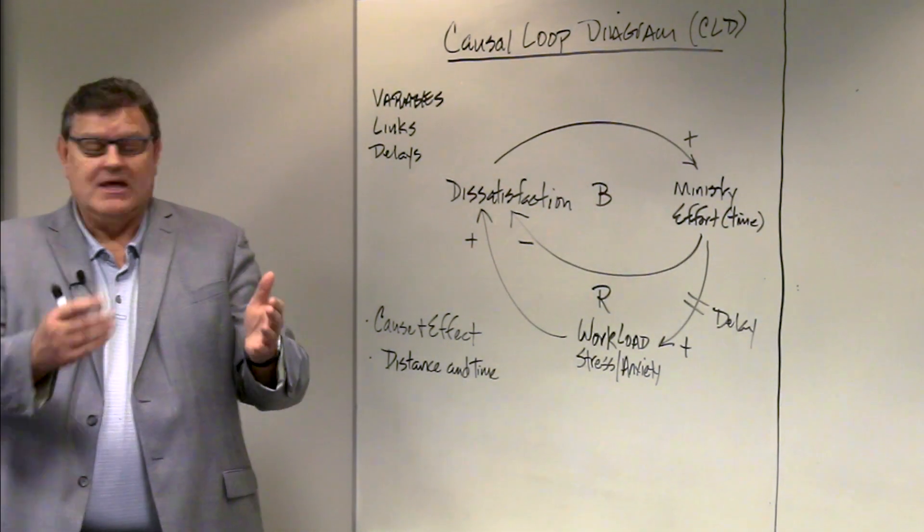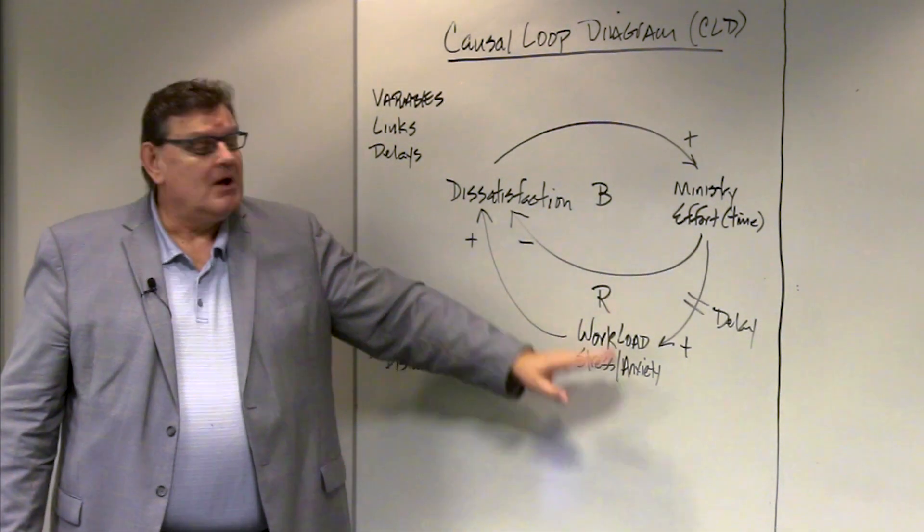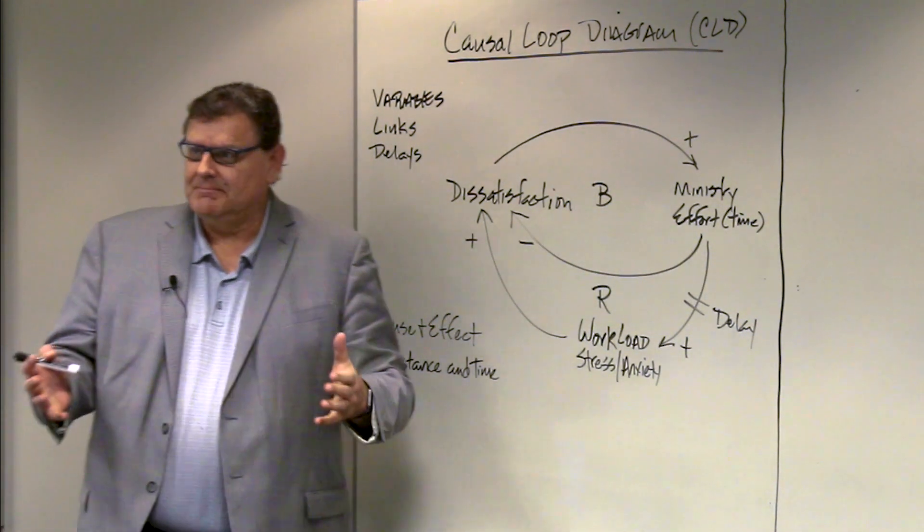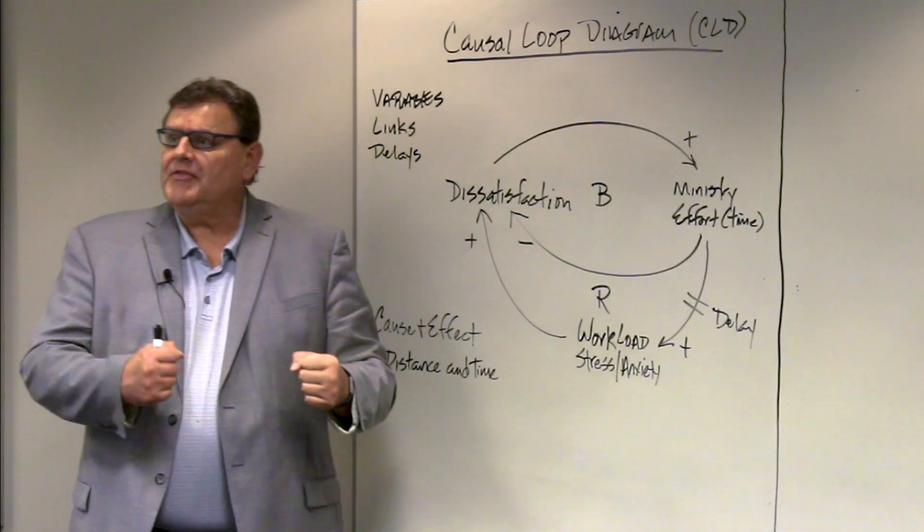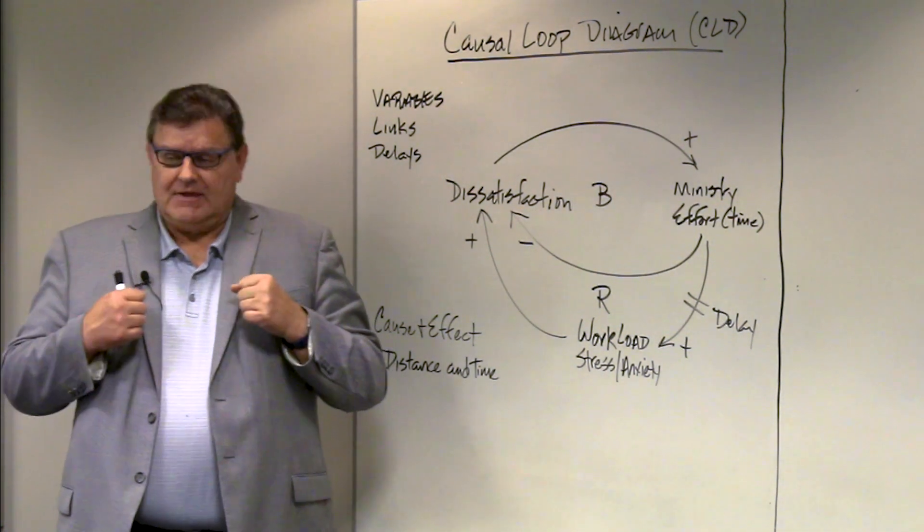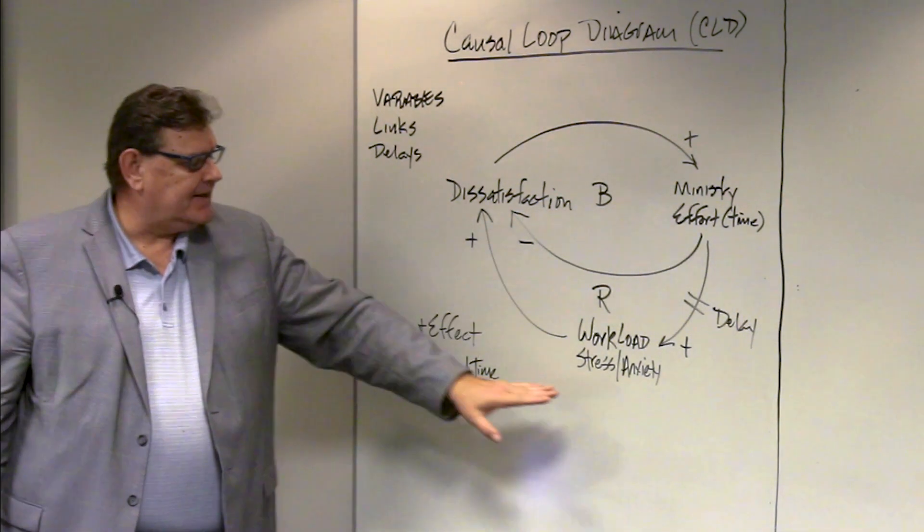The reason that Moses probably didn't recognize this, and Jethro did, is that Jethro was looking on this as an outsider who wasn't wrapped up in the system so he could see more objectively. But Jethro recognized that his stress and anxiety level was going up. Moses did not recognize that. He was just doing ministry like so many good pastors do. They're just doing what they need to do to get the ministry done. They keep going and they give more hours and do more.